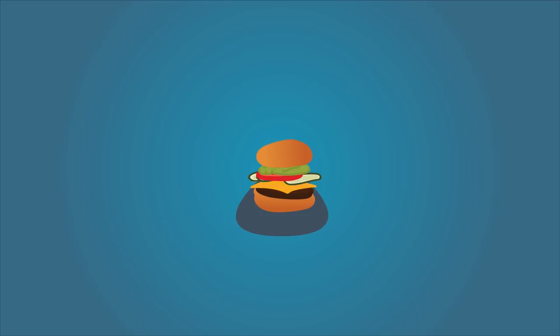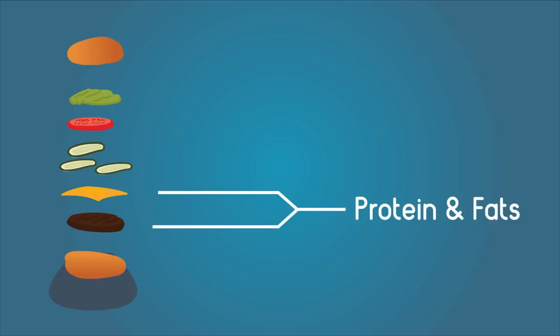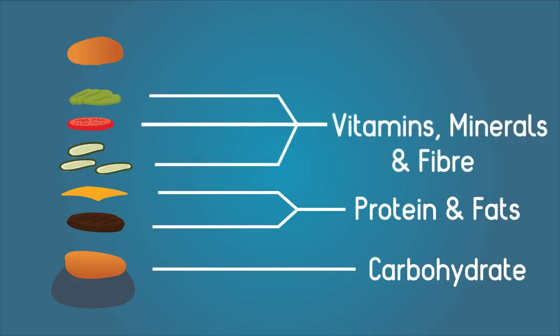Hmm, look at this juicy burger. Doesn't it look appetizing? It has so many good things in it that my body needs: protein and fats in the meat and cheese, carbohydrates in the bun, vitamins, minerals, and fiber in the salad. But how can I use them? I need to get them into my blood, and this burger is never going to fit.